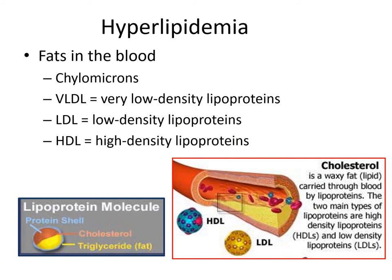If we look closer at fats in the bloodstream, we can categorize them based on their density — how heavy they are. The heavier ones contain more protein than triglycerides; the lighter ones contain more triglycerides than proteins. Proteins are heavier than fat. If we spun blood down in a centrifuge, the heaviest lipoproteins would be at the bottom and the lighter ones toward the top. That is how we have come to the names we're going to discuss.